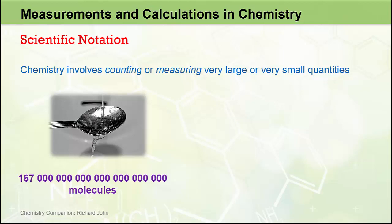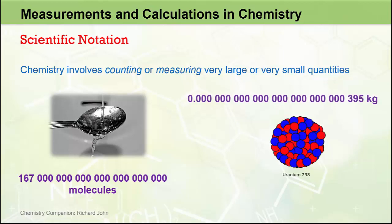For example, a teaspoon of water contains 167 billion trillion molecules. At the other end of the scale, the mass of a uranium atom, which is the most massive of the naturally occurring atoms, is this many kilograms — an incredibly small number.